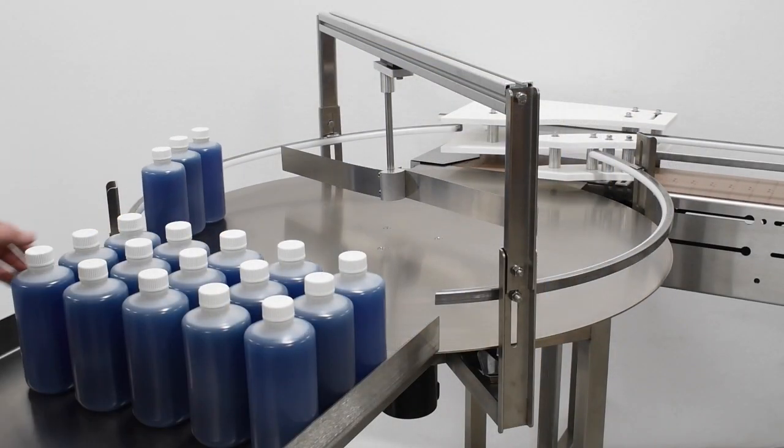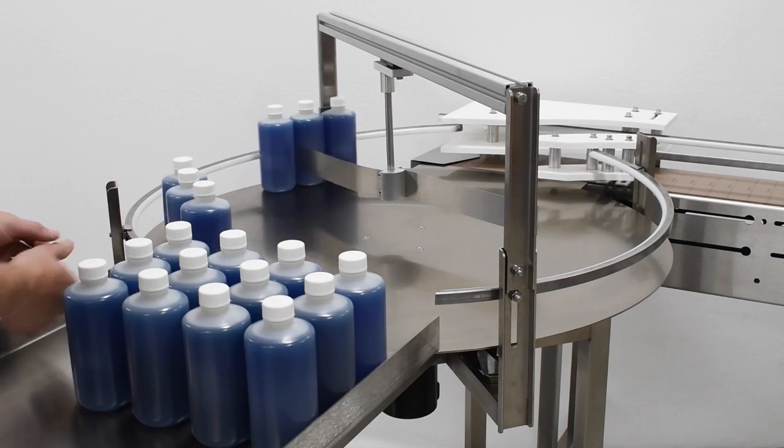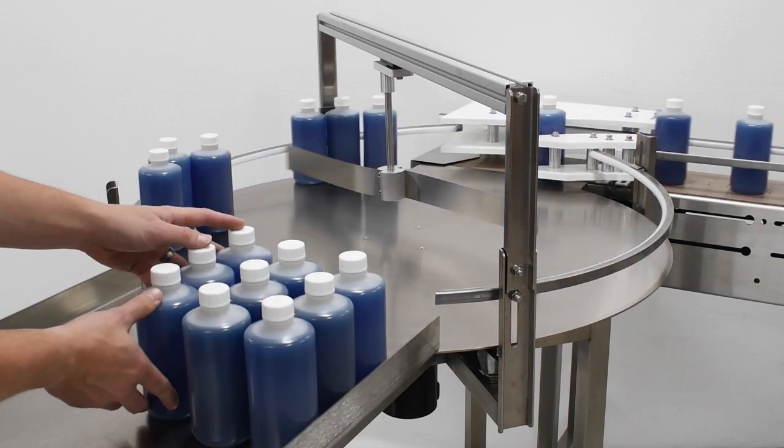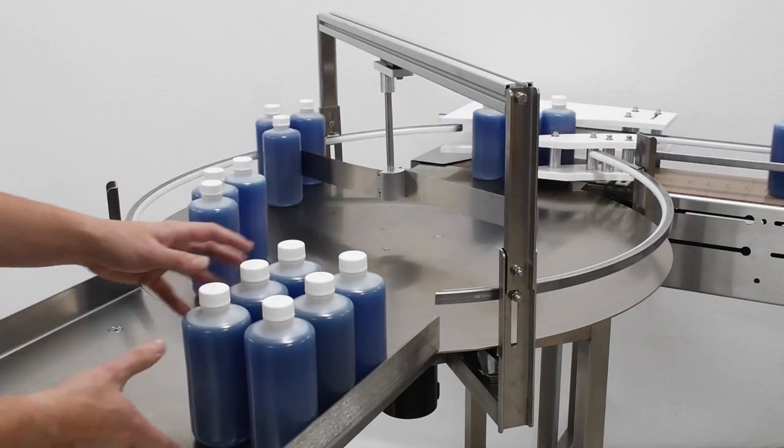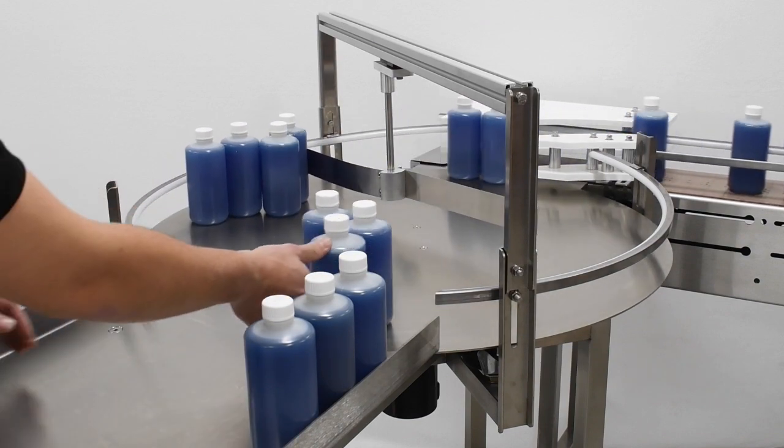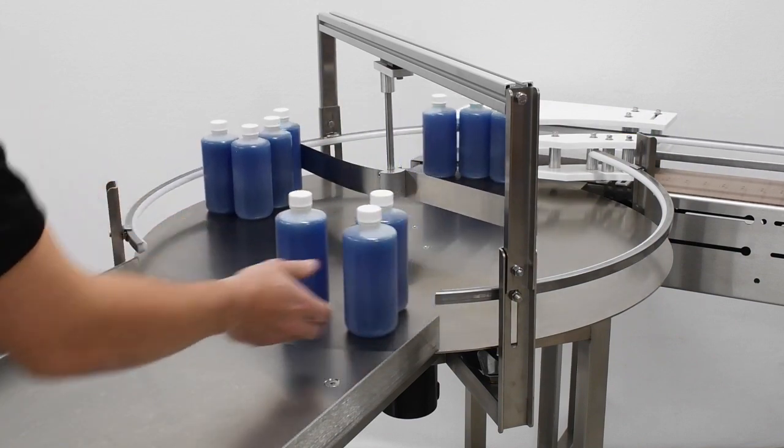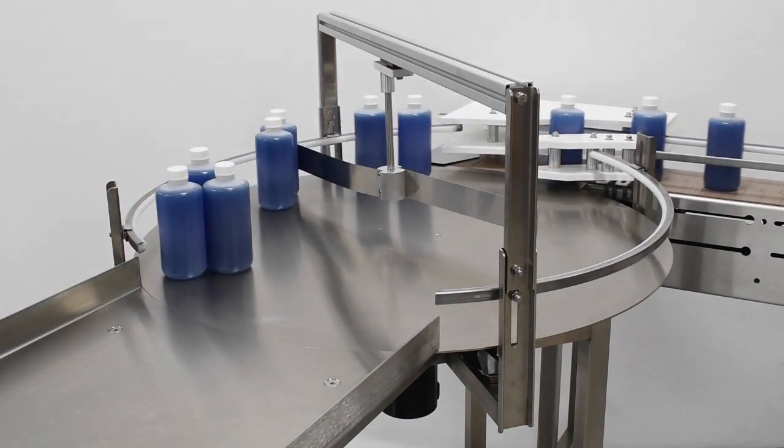If excess volume or disorganization of containers on your accumulation table is a problem, we recommend an unscrambler, shown here. This device is attached to the table and pushes containers to the outer edge of the table to be picked up. For more information on installing your unscrambler, please see our video tutorial on the subject.